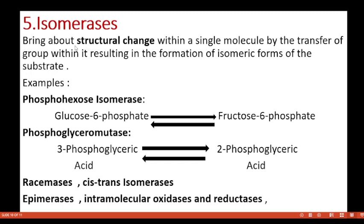The fifth class is isomerases. These enzymes bring about structural changes within a single molecule by transfer of a group within it, resulting in the formation of isomeric forms of the substrate. Example: phosphohexose isomerase converts glucose-6-phosphate reversibly to fructose-6-phosphate, its isomer. Phosphoglyceromutase converts 3-phosphoglyceric acid to 2-phosphoglyceric acid. Other examples are racemases, cis-trans isomerases, epimerases, intramolecular oxidases, and reductases.